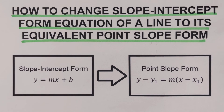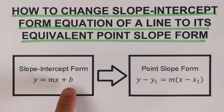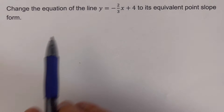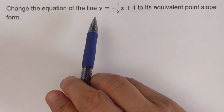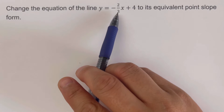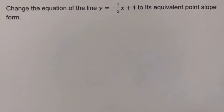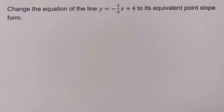Going back, our target is to change the slope-intercept form of a line to its equivalent point-slope form. Let's look at some examples. In this problem, we're supposed to change the equation y equals negative 2 over 3 times x plus 4 to its equivalent point-slope form.